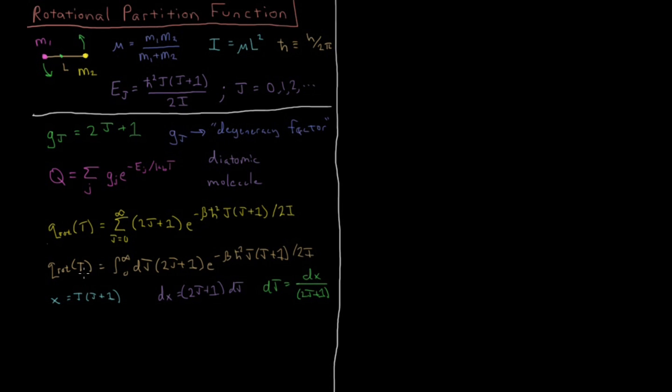Substituting back in, q is going to equal the integral from 0 to infinity. When we substitute the limits for j equals 0, we get x equals 0; for j equals infinity, x equals infinity. So the limits stay the same. Integral from 0 to infinity, dx times the 2j plus 1 which was there, divided by the 2j plus 1 in the dj substitution. So that nicely cancels out for us.